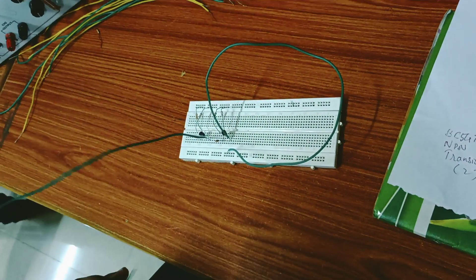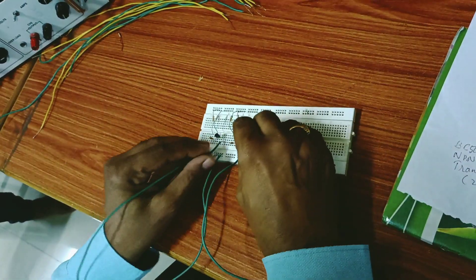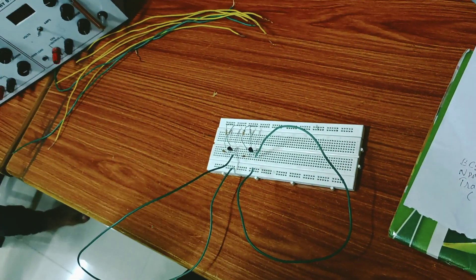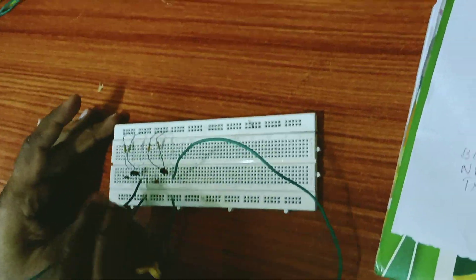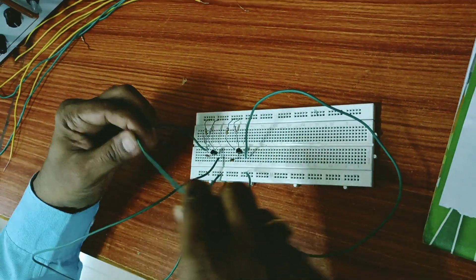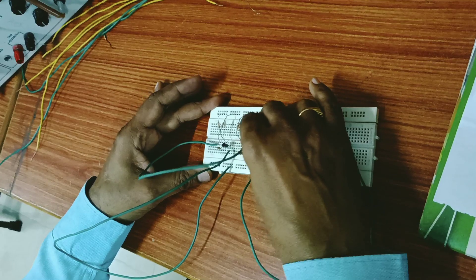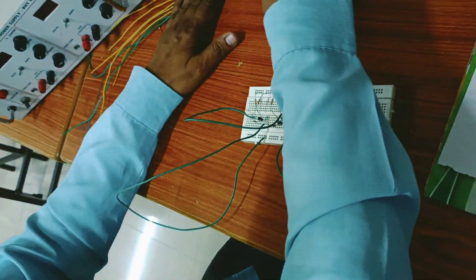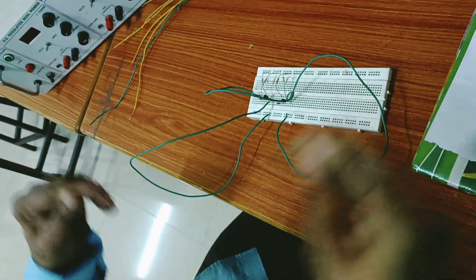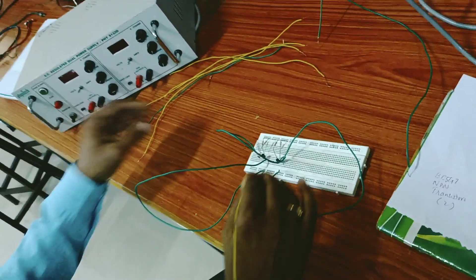This will go to the negative terminal of the battery, that is regulated power supply. Now connect the junction of resistors 33 kilohm and the capacitor of one transistor to the base terminal of the other transistor.